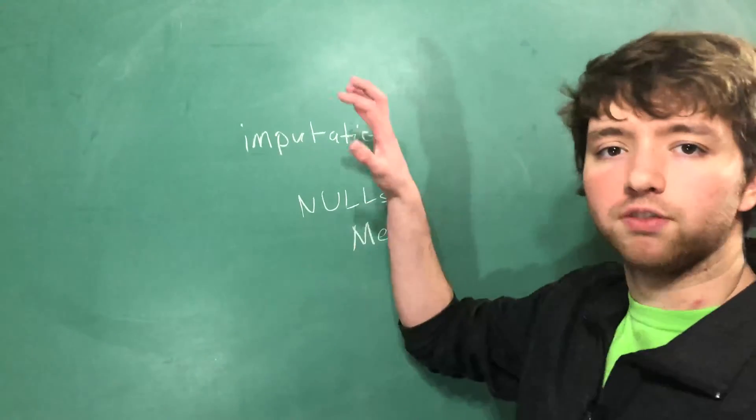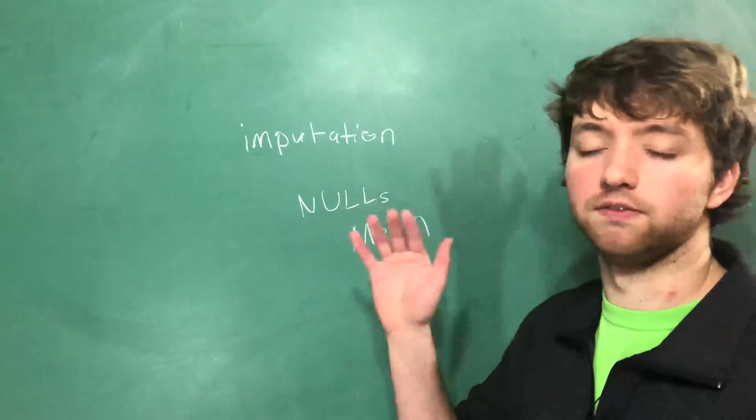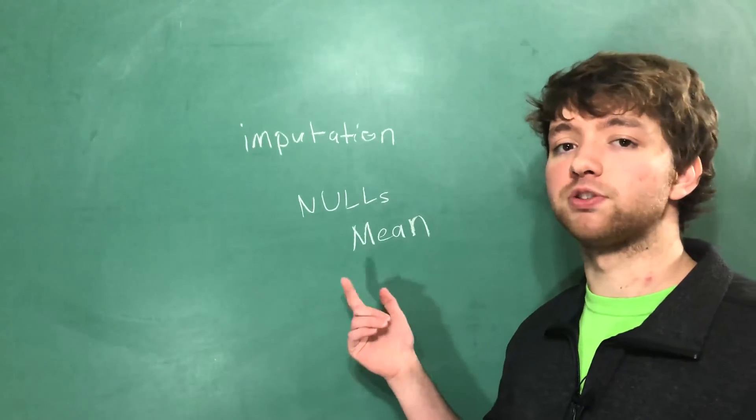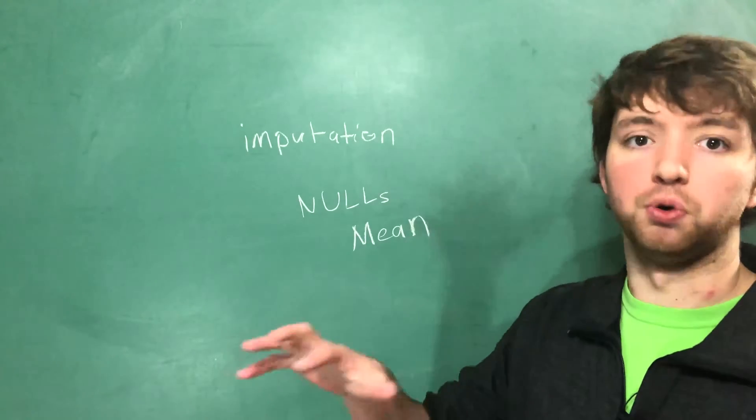What that does is it looks at all of our data and it stays generally the same but now we don't have a lot of nulls. And because we used one of the measures of central tendency, the meaning of the data didn't change a whole lot.